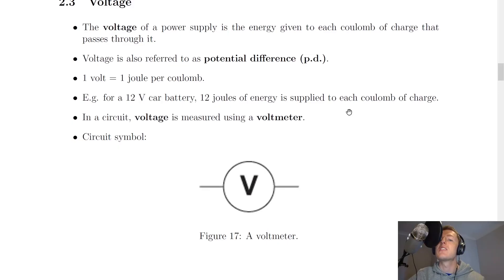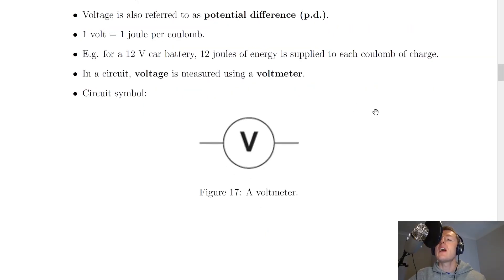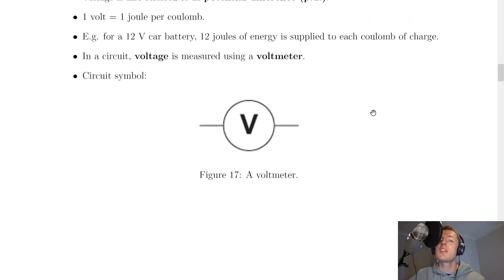But we're just expanding on that a bit to say 12 joules of energy is supplied to each coulomb of charge. So if you are given some kind of value, say 5 volts, then you would say that 5 joules of energy is supplied to each coulomb of charge. And lastly, how would you measure voltage in a circuit? Well, if you want to measure the voltage across a circuit component, you would use this thing called a voltmeter.